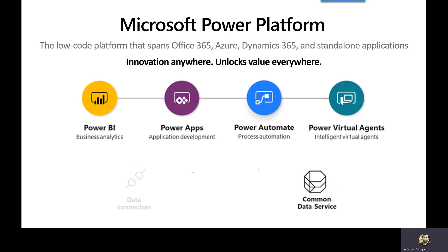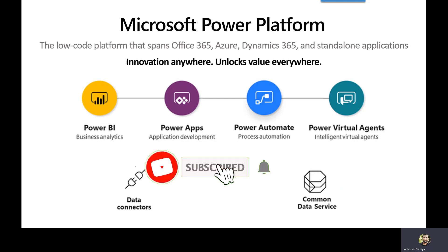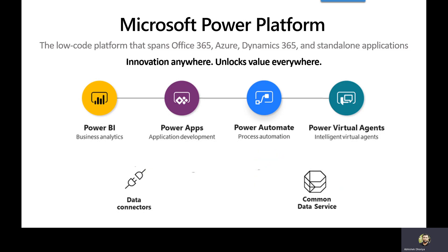Let us now understand how you are able to connect to external systems with Power Platform. That becomes possible with the help of data connectors, or Microsoft Power Platform connectors. There are more than 300 out-of-the-box default connectors available for you to connect to external services like YouTube, Facebook, MailChimp, and many more. But if you do not find the intended data connector for your custom application, you can build your own custom data connectors that will be easily integrated with Power Platform and used in your custom scenarios.